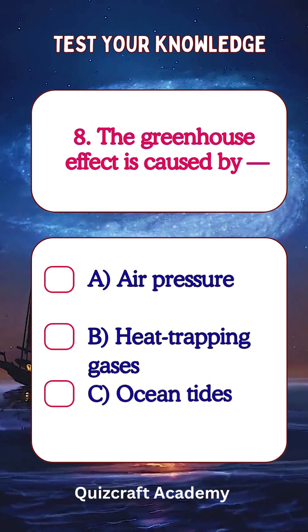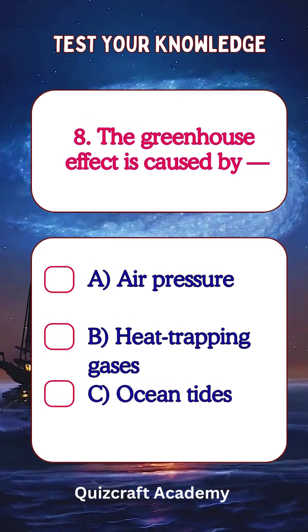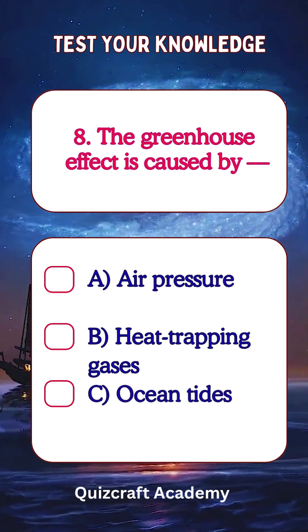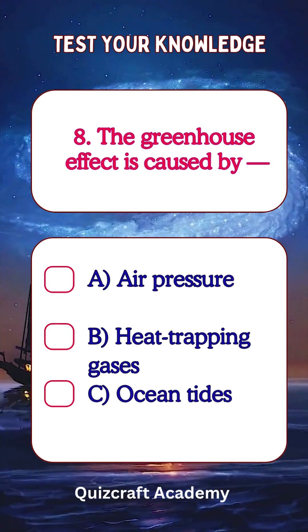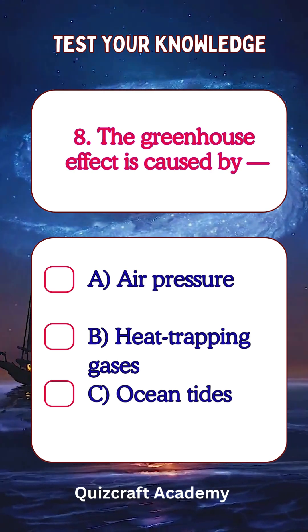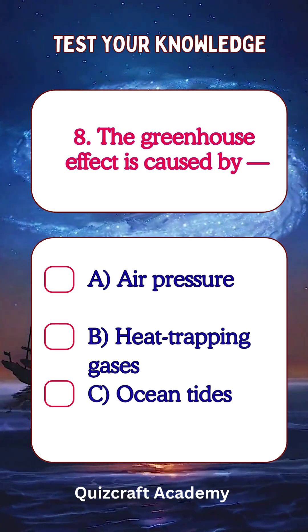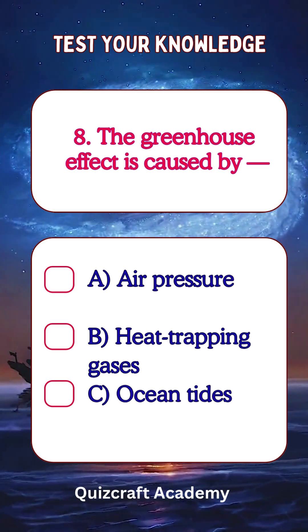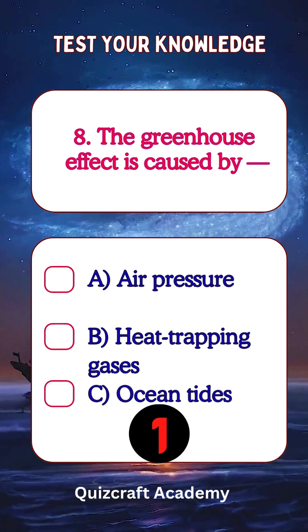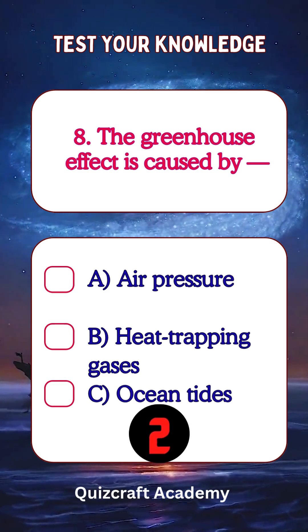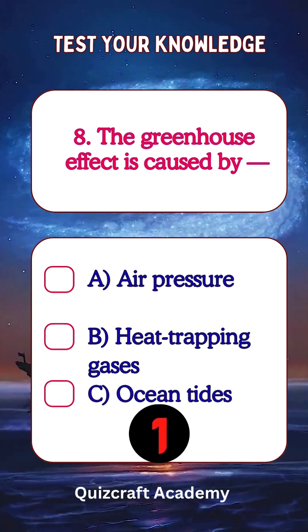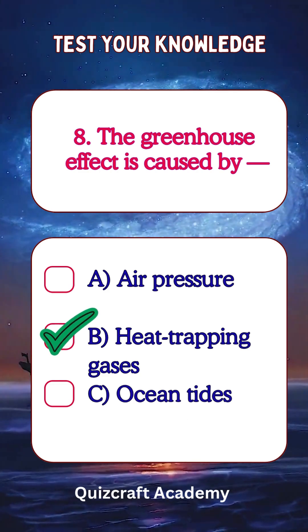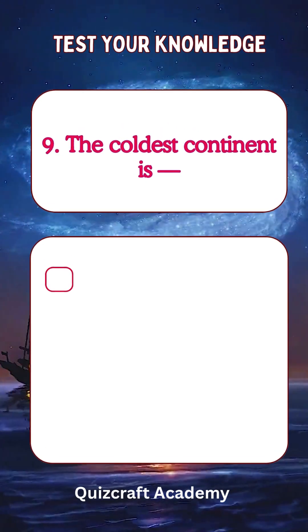The greenhouse effect is caused by: a. air pressure, b. heat trapping gases, c. ocean tides. Answer: heat trapping gases.